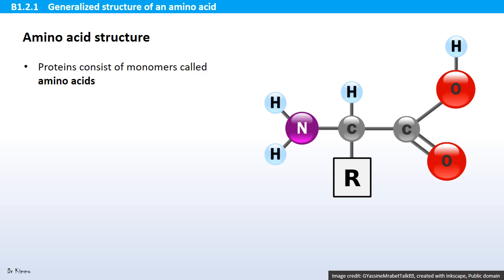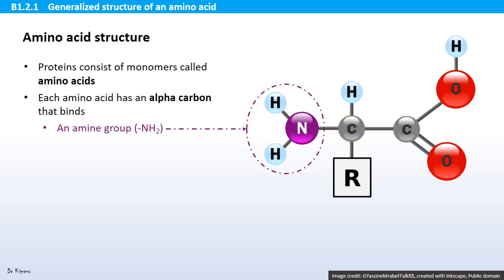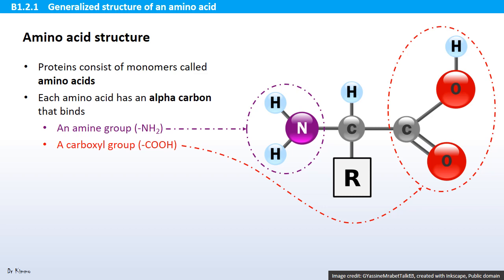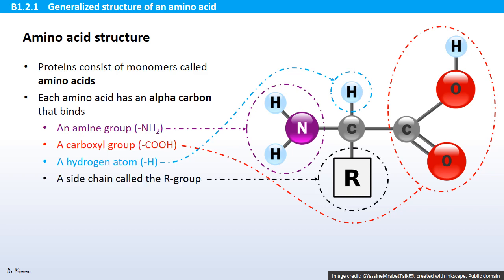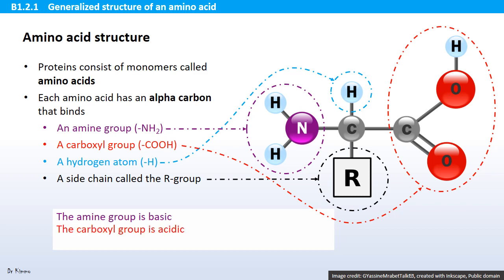Proteins consist of monomers called amino acids. Each amino acid has an alpha carbon, and that alpha carbon binds an amine group, a carboxyl group, a hydrogen atom, and a side chain called the R group. The amine group is basic and the carboxyl group is acidic, which means that the amino acid is amphiprotic — it can act both as a base and as an acid.